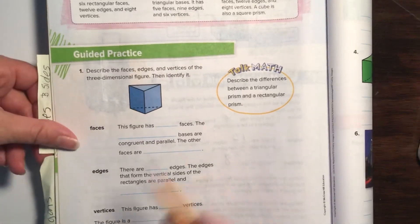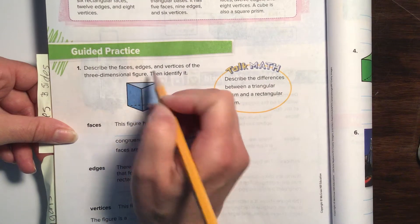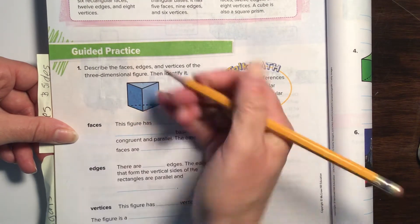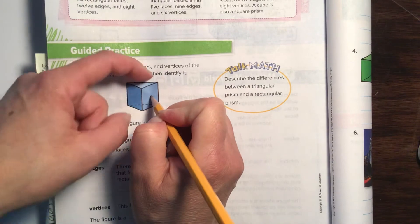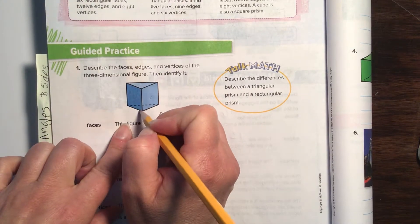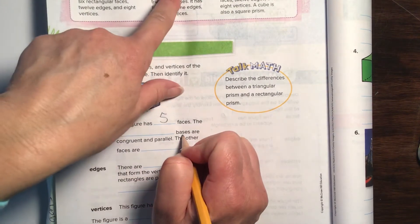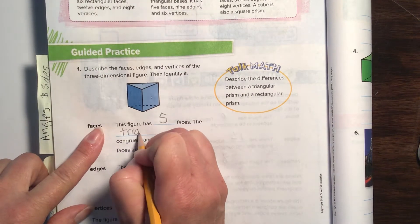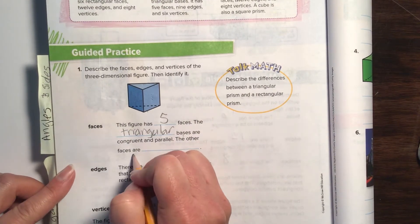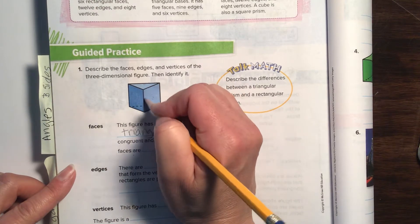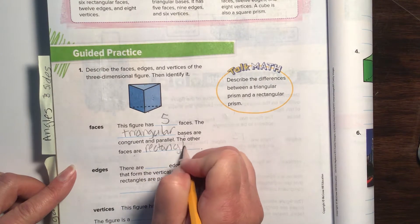Okay, number one. This figure has how many faces? If we were going to count all the faces: one, two—remember there's one on the back—three, four, five. And then the very flat part of the back is six. So there's five faces. My bad. Five faces. One, two, three, four, five. There we go. And the base is what? Triangular. Good job.